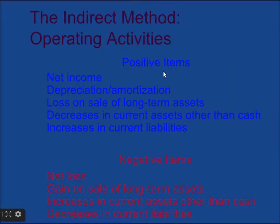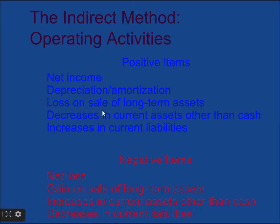The positive terms — things to add to net income — are: net income, depreciation, amortization, loss on sale of long-term asset, decreases in current assets other than cash, and increases in current liability. The negative terms — things to deduct from net income while calculating cash flow from operating activities — include net losses.